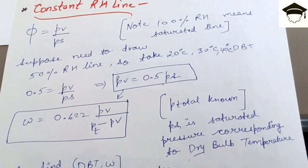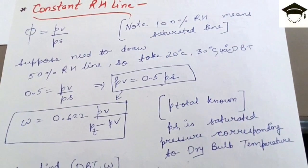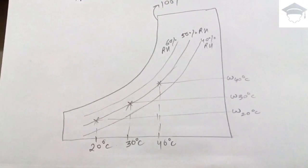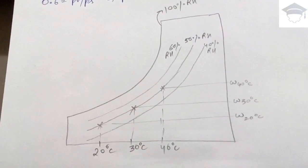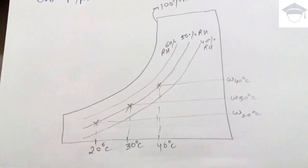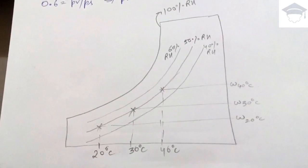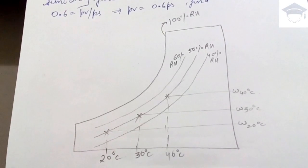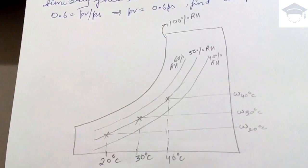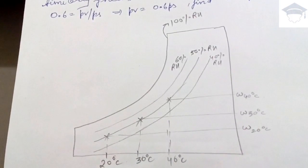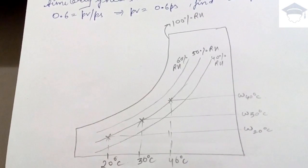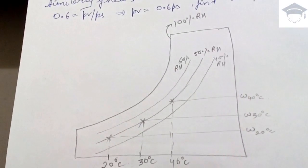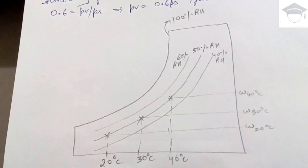To draw the 50% RH line, take 20°C and find the corresponding omega. Locate that point by moving up from 20°C on the x-axis and moving left from the omega value on the y-axis — their intersection is one point. Mark dry bulb temperature and specific humidity at suitable scale intervals on both axes, plot the corresponding points, then join them with a smooth curve.